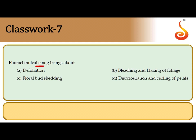The seventh question asks what photochemical smog brings about. Photochemical smog forms when pollutants react with sunlight, creating a secondary pollutant containing toxic chemicals like ozone and peroxyacetyl nitrate (PAN). In the case of plants, photochemical smog causes bleaching and blazing of foliage. The correct answer is the second option: bleaching and blazing of foliage.